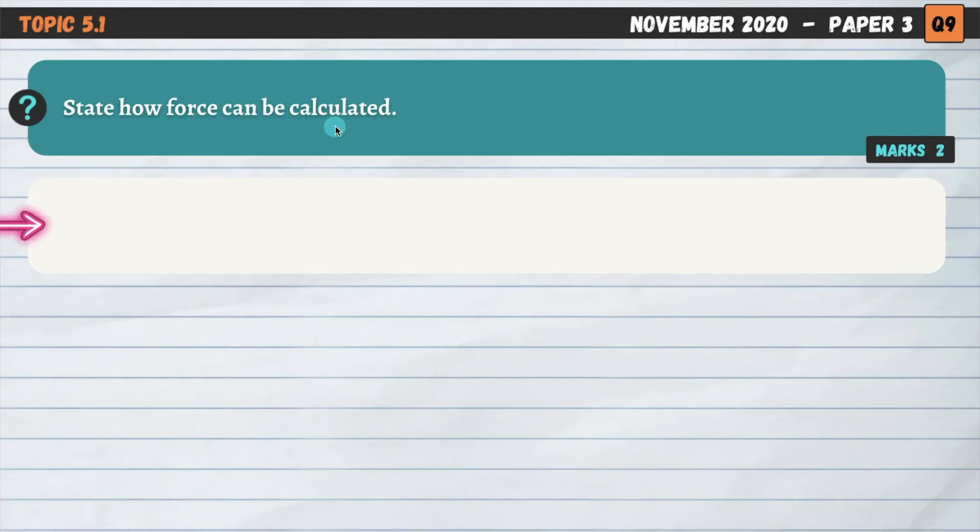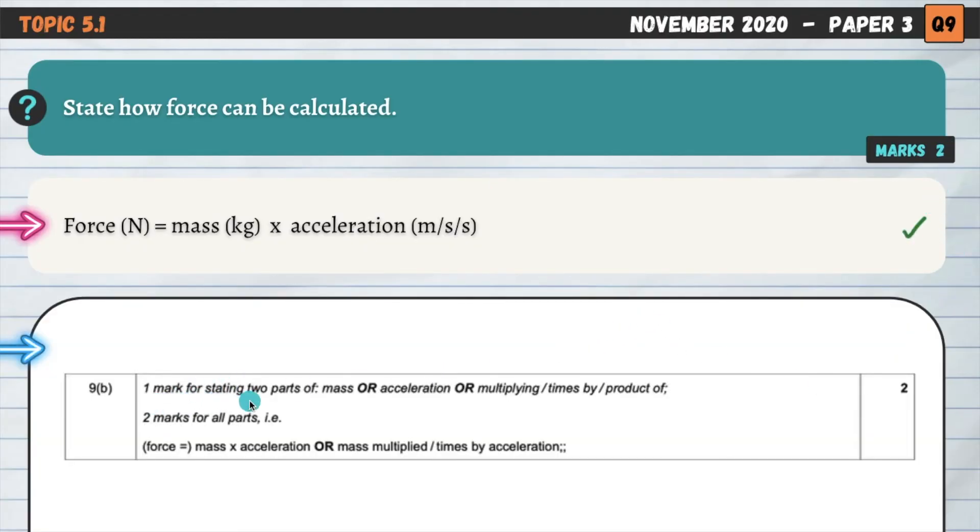5.1, state how force can be calculated. And this is a really simple question. You need to know the equation that's used to calculate force. And it is force equals mass times acceleration. And it's always a good idea to include the units if you can. So forces in newtons, mass in kilograms, and acceleration in meters per second per second or meters per second squared. So how is this one worth two marks? Well, you're going to get one mark for stating two parts of mass or acceleration or multiplying the product of. Essentially, it's two marks for all parts. So if we do the whole equation like we have here, it's two marks. But essentially, we're going to get one mark for stating mass or acceleration. And then our other mark's going to come for making sure that we've got that multiplication in there as well. So really simply make sure you learn the equation, write the whole thing down, and you're going to get two marks for that question.